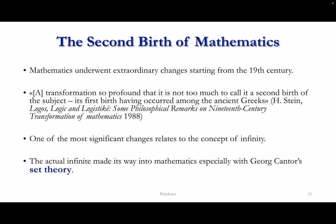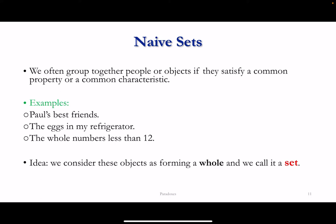This happened especially through the work of mathematician Georg Cantor, particularly because of his work in what is called set theory. Before looking at Cantor's ideas, let's build an intuition of what sets are — what are often called naive sets. A set is essentially a way of grouping together things that are similar in some respect.